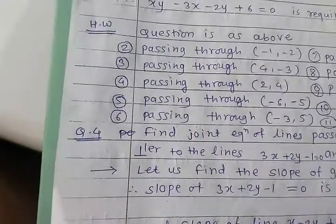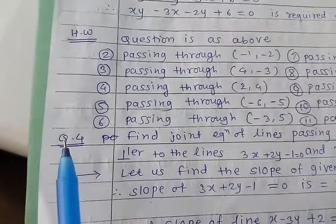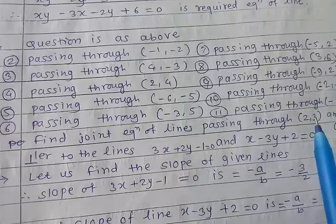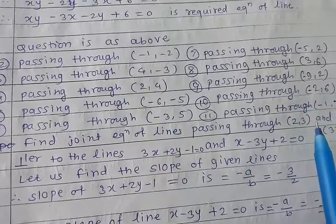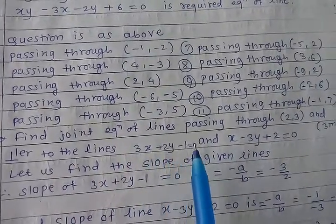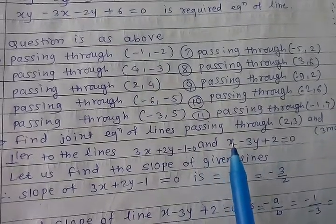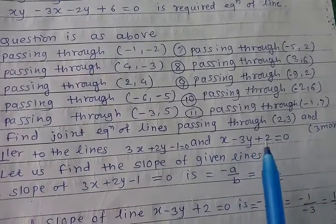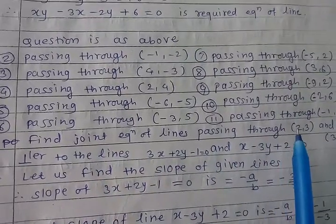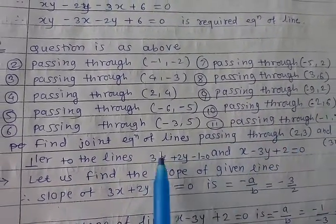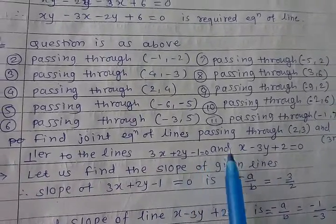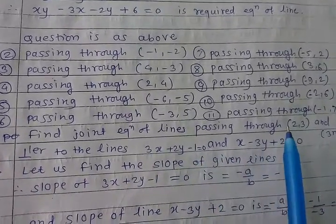Next, example 4: Find the joint equation of a line passing through (2, 3) and perpendicular to the lines 3x + 2y − 1 = 0 and x − 3y + 2 = 0. The lines pass through (2, 3) but are perpendicular to those two given lines, and we have to find their joint equation.